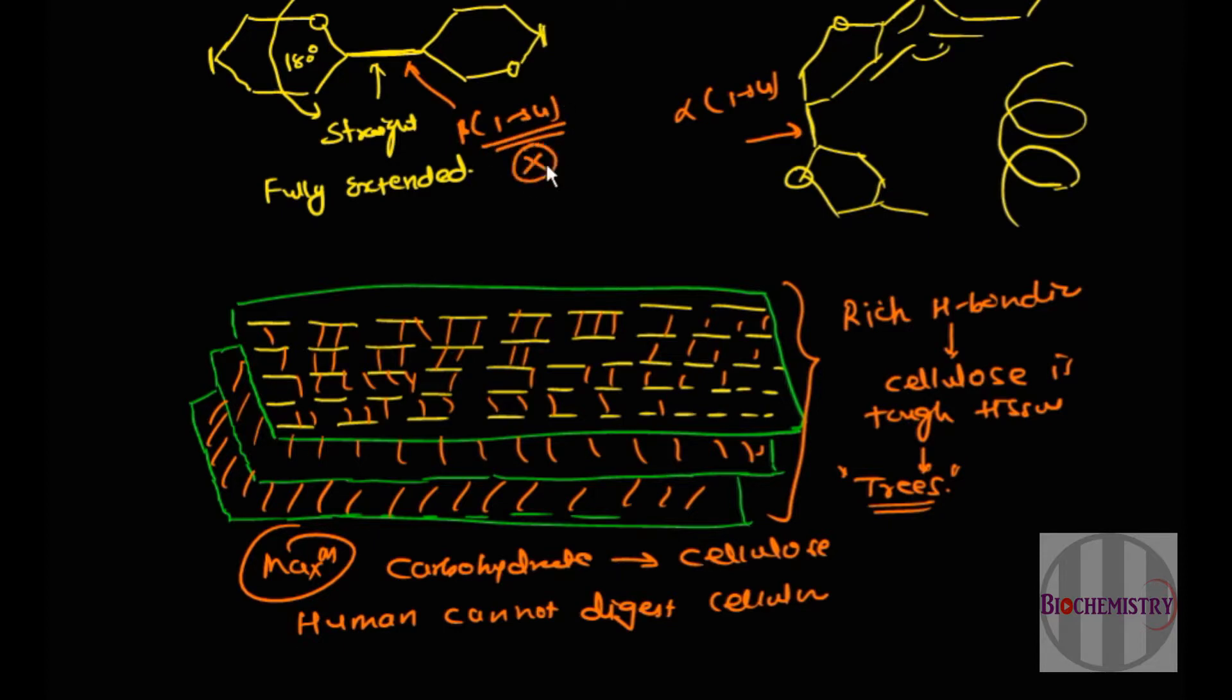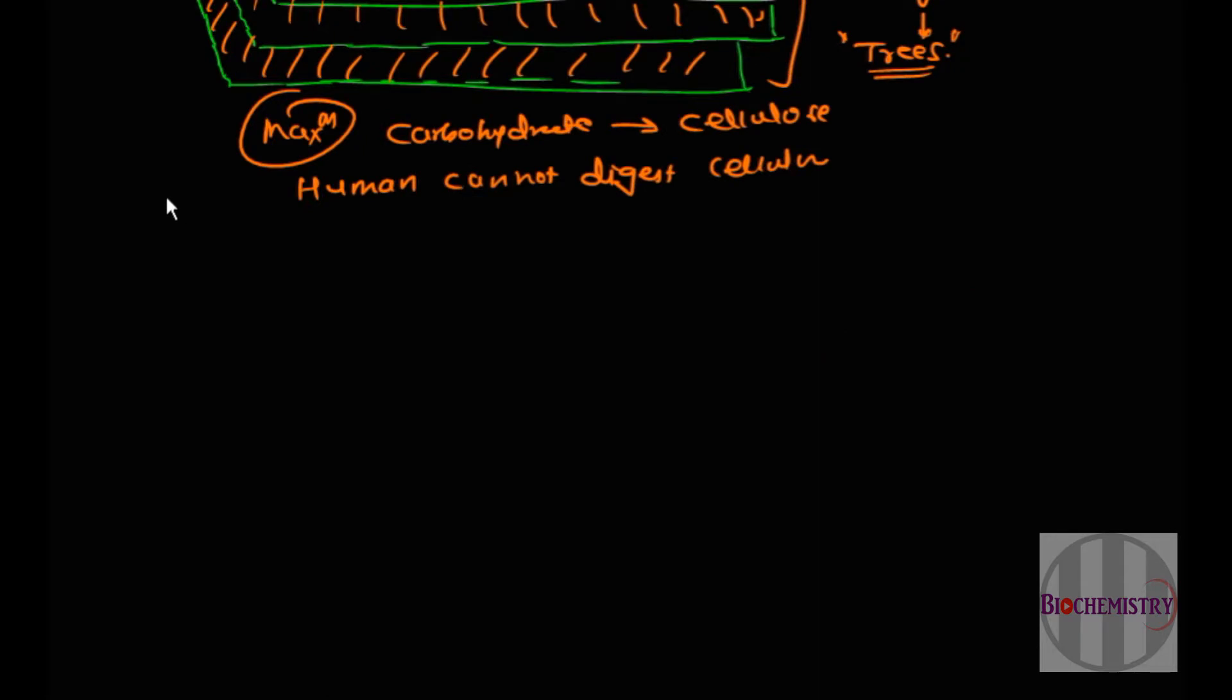To break these, one enzyme is required that is known as cellulase, which is absent in humans. But some ruminant animals like cattle, deer, giraffe, and camels can digest cellulose.